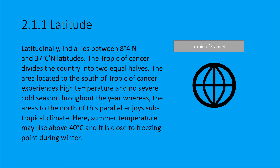The Tropic of Cancer passes through India. It divides India into two halves — the Tropic of Cancer is located roughly in the middle of the country.